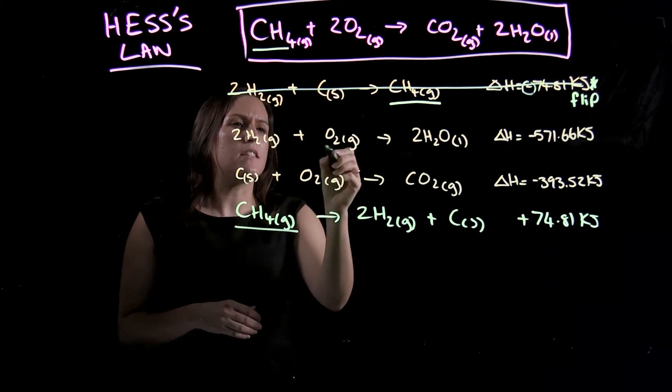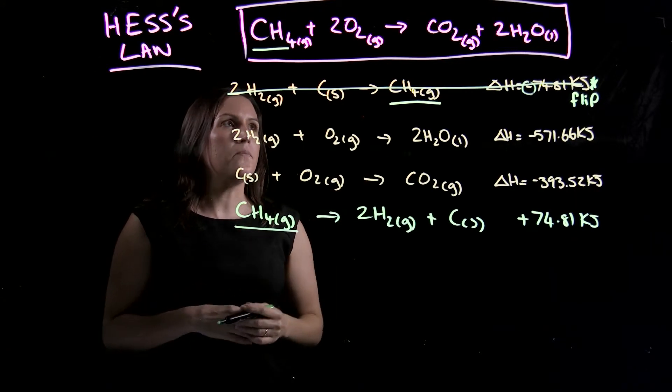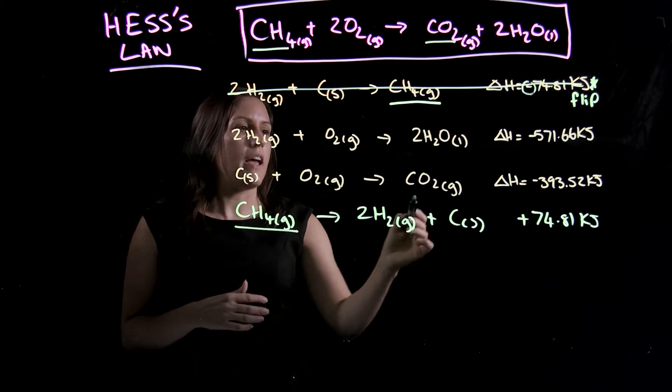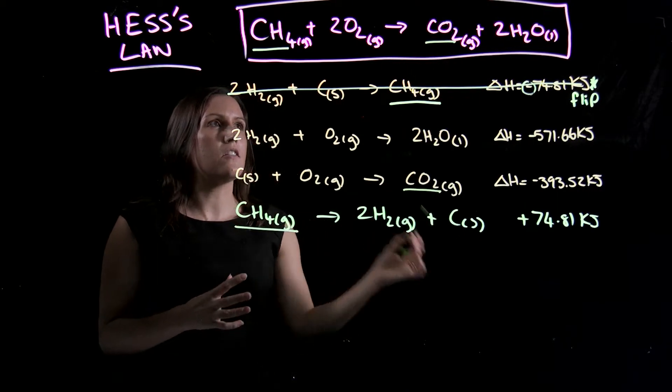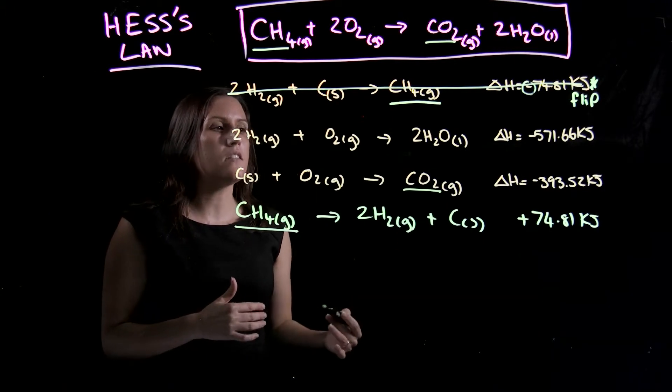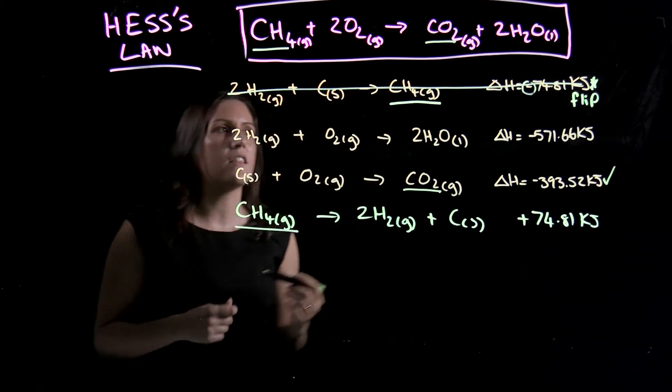So our O2s, I can see there's a couple of them in the reaction. So I'll skip over that one, and I'll go to something a bit more simpler. So I've got my CO2 here, and I've got my CO2 there. It's on the right side. Okay, so it's a product in both equations, and there's one of them. So that one I don't want to change. We can lock that one in.